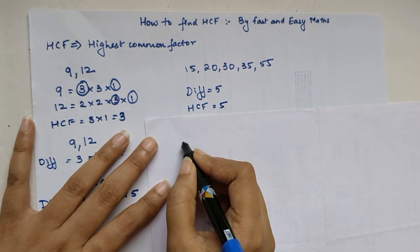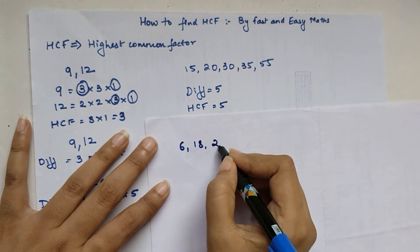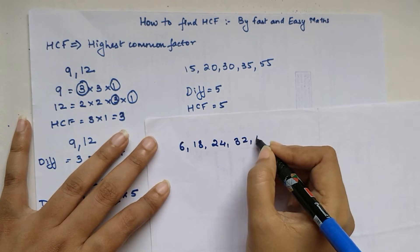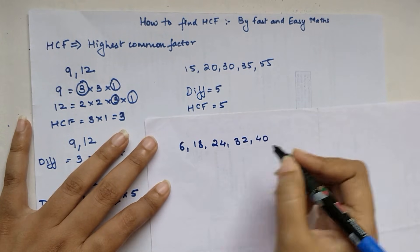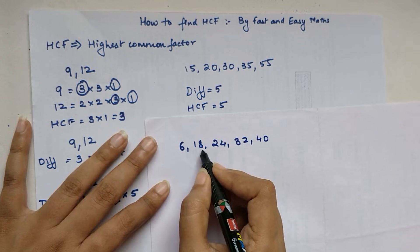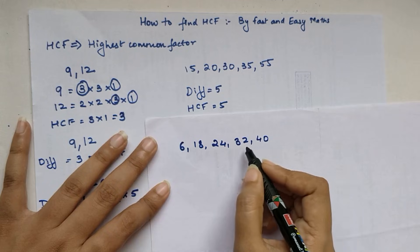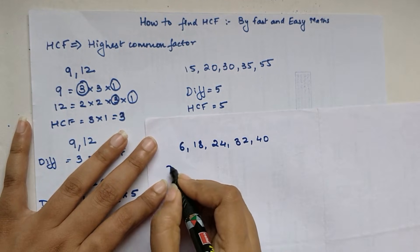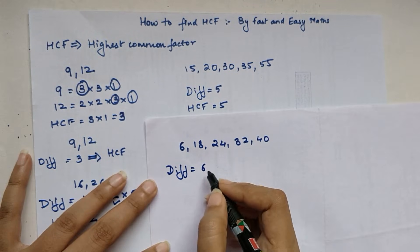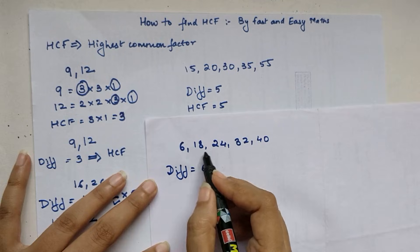Let's look at another set: 6, 18, 24, 32, and 40. The differences are: 12 between 6 and 18, 6 between 18 and 24, 8 between 24 and 32, and 8 between 32 and 40. So the smallest difference is 6.